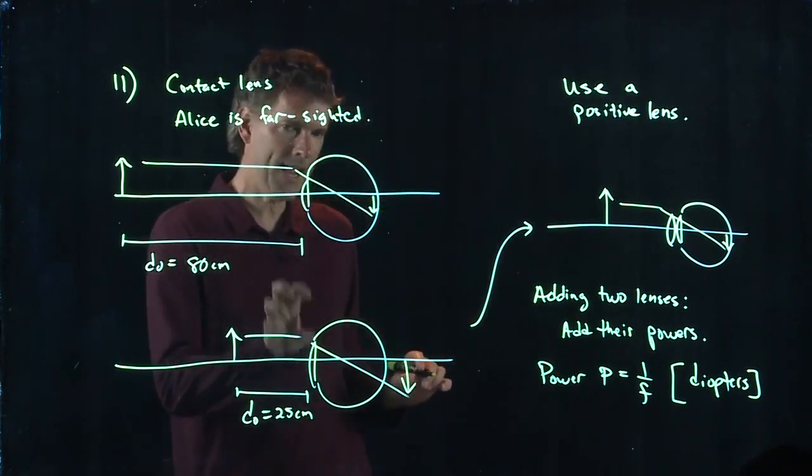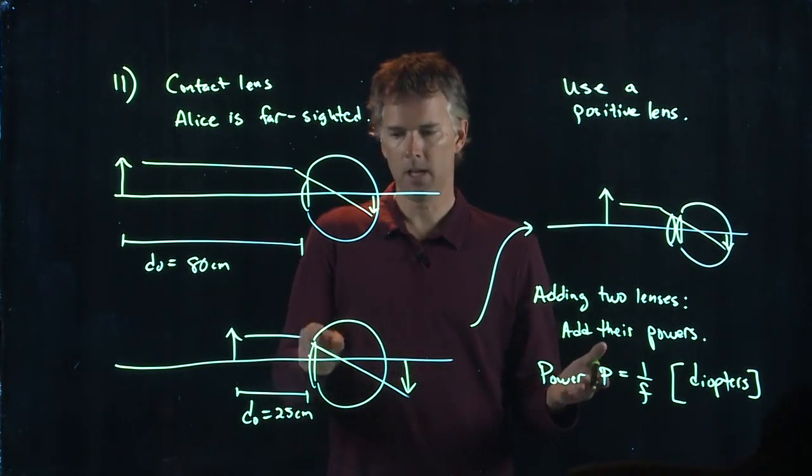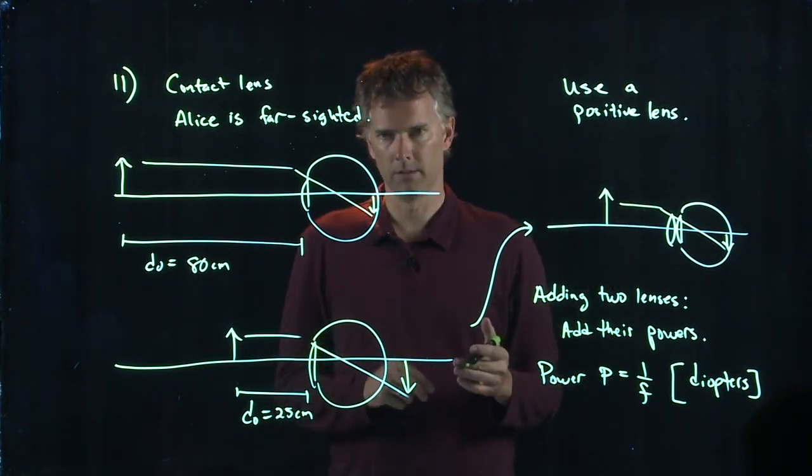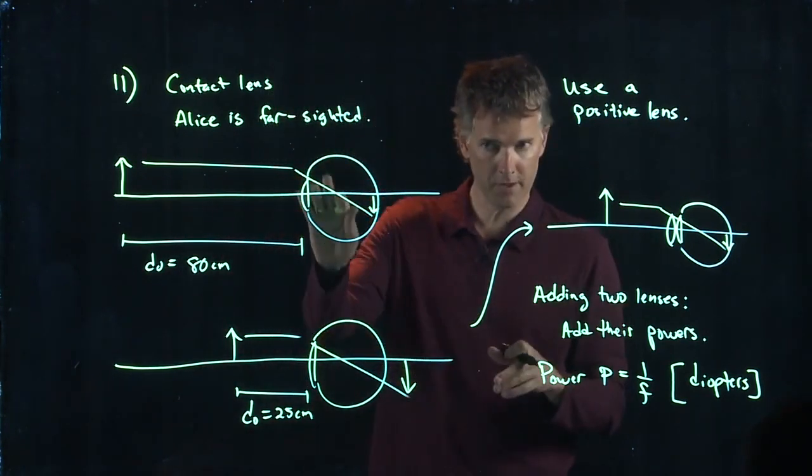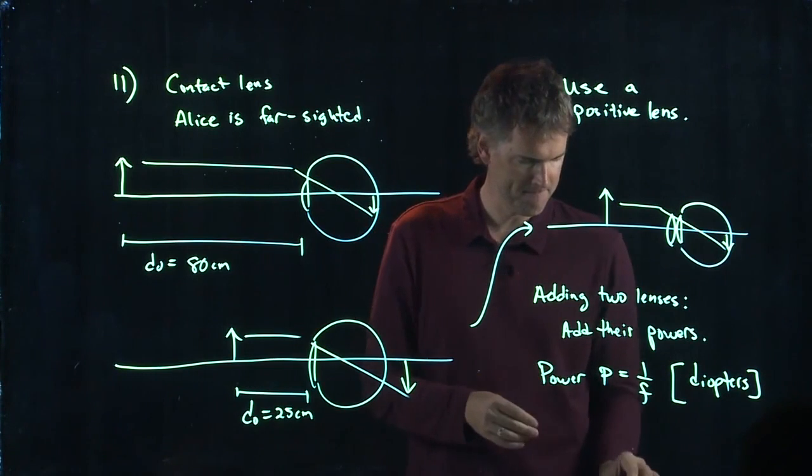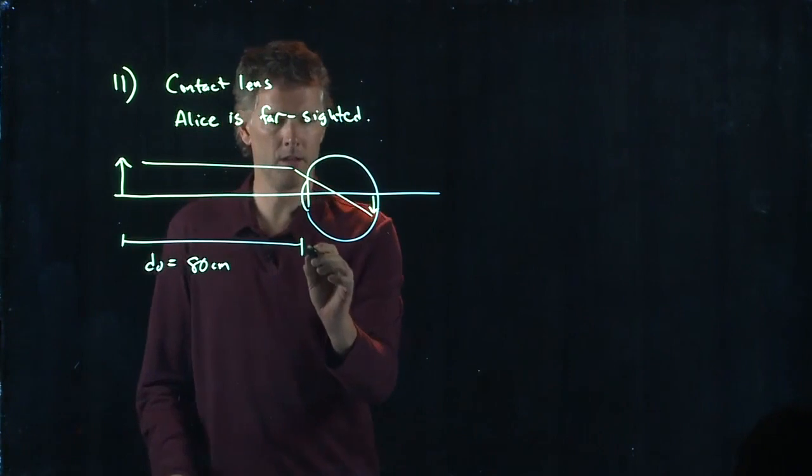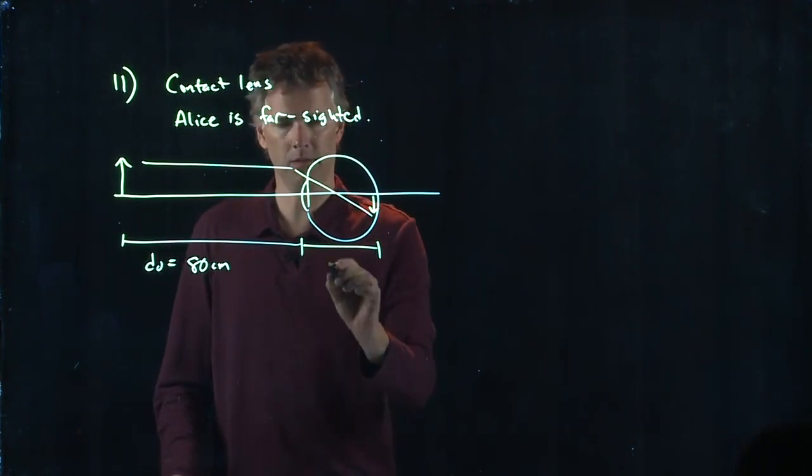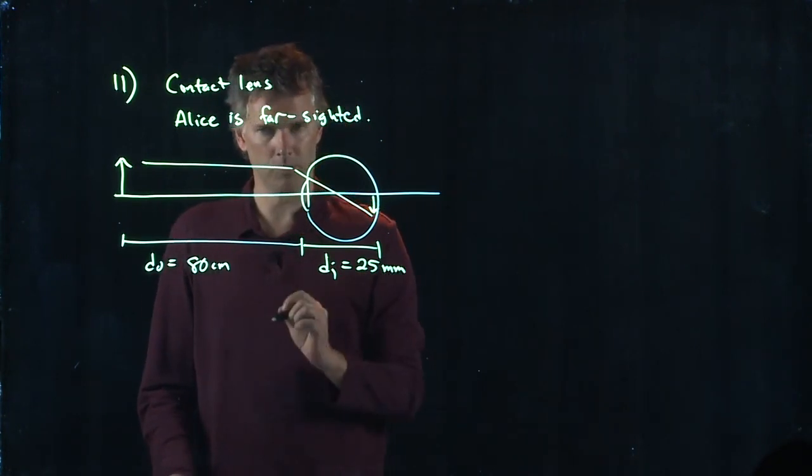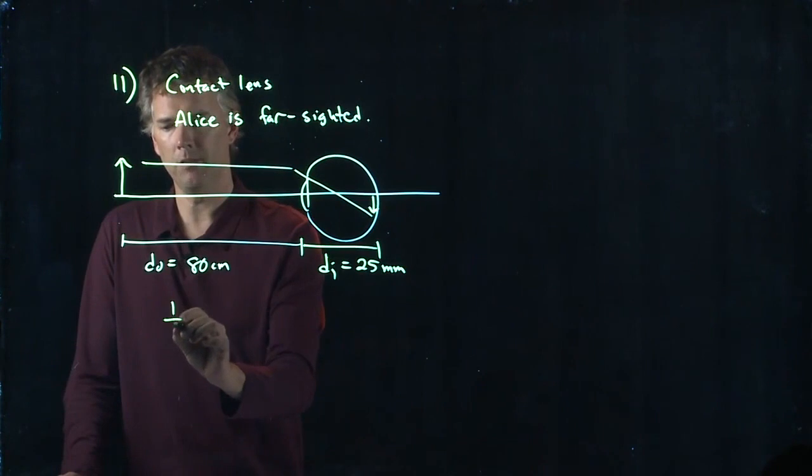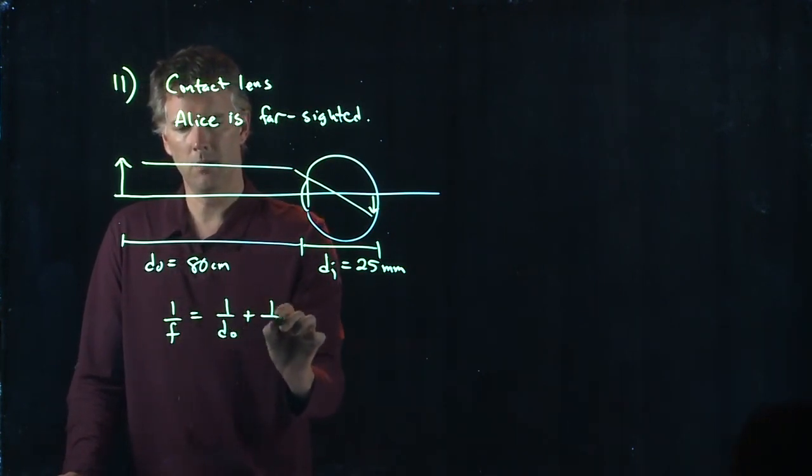So in this new case, we need to figure out how much power to add in a contact lens. And to do that, we need to know the power of her eyeball in the first case. So what is the image distance? The image distance is the size of the eyeball, which is 25 millimeters. And therefore, in this case, we have one over f equals one over do plus one over di.